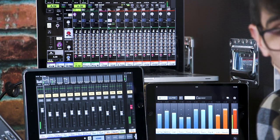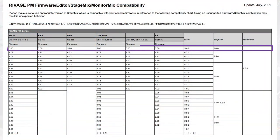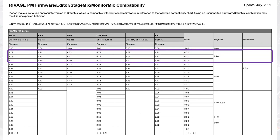Before you get connected, make sure your app versions are compatible with the hardware. Check the compatibility chart in the Downloads page for RIVAGE PM systems on Yamaha's website. For example, RIVAGE PM version 4.7 requires StageMix version 1.5.0 and MonitorMix version 1.3.0.